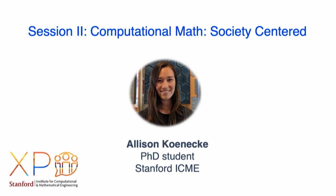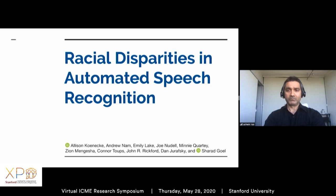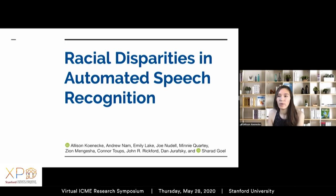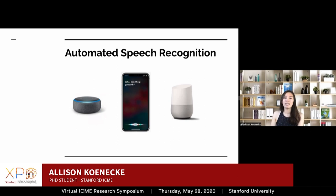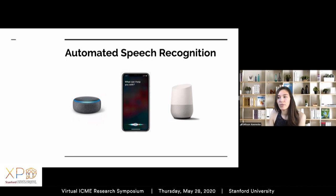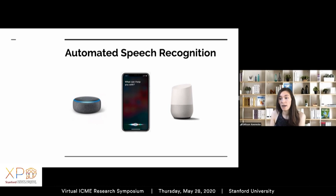I'll be talking about racial disparities in automated speech recognition — ASR — which is joint work with Stanford and Georgetown linguists and computer scientists. The first question is: what is ASR? You likely encounter these technologies in your home or pocket via products like Alexa or Google's voice assistant. We studied speech-to-text systems similar to these and found that the systems performed twice as poorly for black speakers as for white speakers. This result held true across all five firms we examined: Amazon, Apple, Google, IBM, and Microsoft.